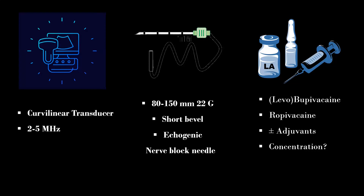Lower concentration of local anesthetic like 0.2% ropivacaine or 0.25% bupivacaine is used for this block. I use 30-40 cc of local anesthetic with 4-8 mg of dexamethasone as an adjuvant.